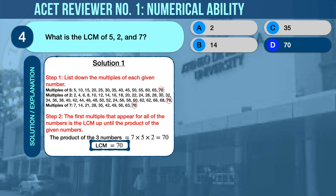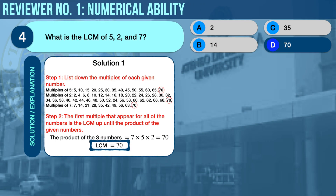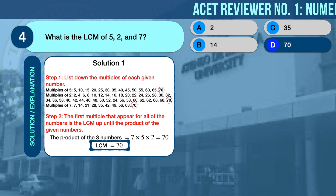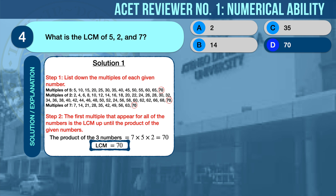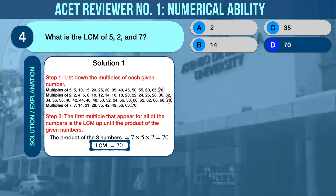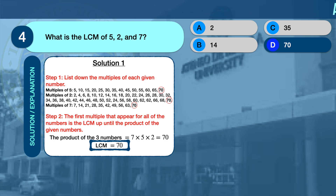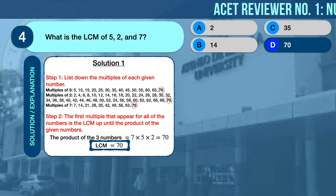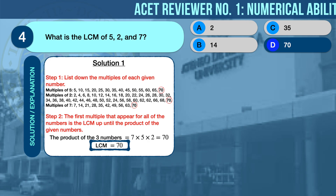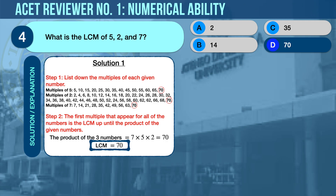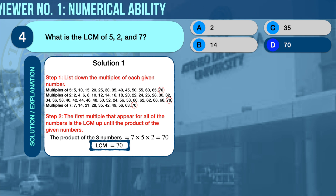The correct answer is D, 70. LCM stands for Least Common Multiple. There are different ways and techniques in finding the least common multiple of two or more numbers. We'll show you two techniques. For the first technique, list down the multiples of each given number. The first multiple that appears for all of the numbers is the least common multiple — up until the product of the given numbers, in this case 7 × 5 × 2 = 70. From the list, the LCM is 70.